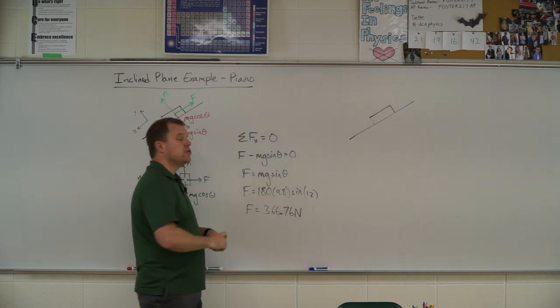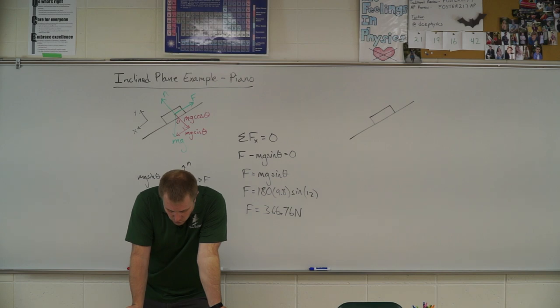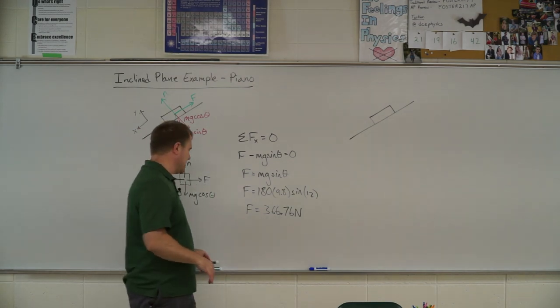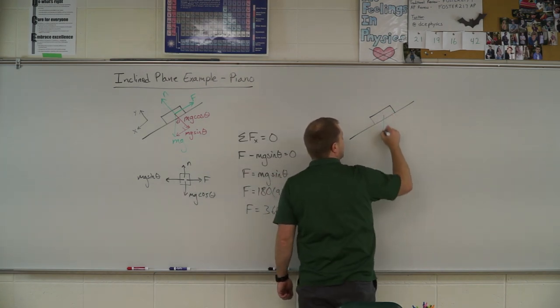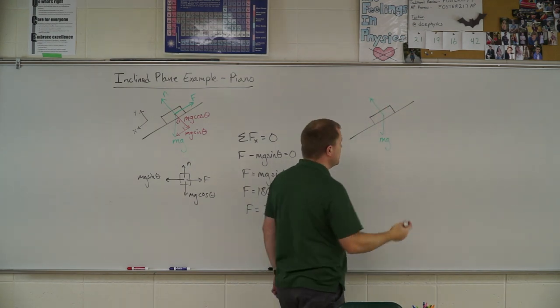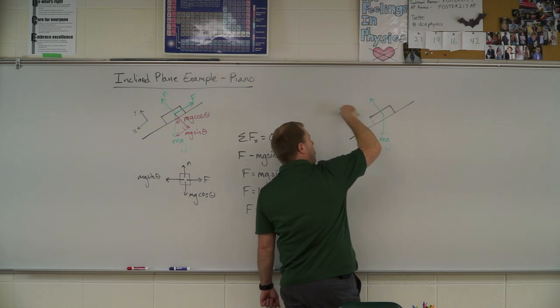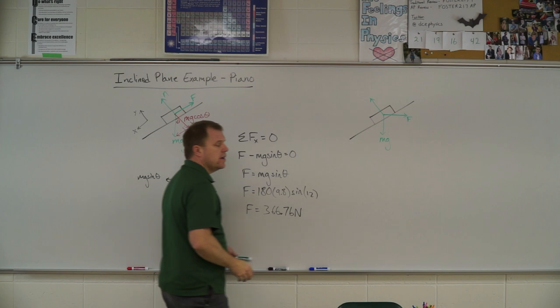Newtons. So what do I do in the situation where they ask, well, what if the man pushes horizontally but still at that constant rate? Okay. So now, instead, I have gravity acting down, mg. I have normal force acting perpendicular to my surface. And I have the man pushing horizontally in on that object.